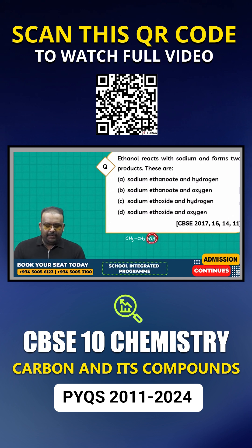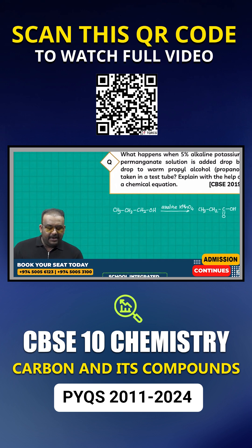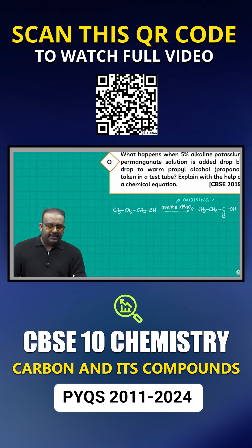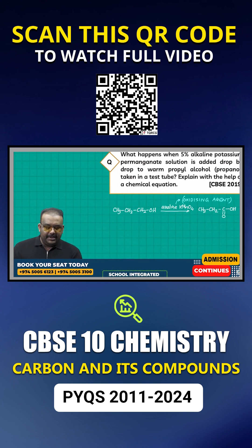In this reaction, what is the role of KMnO₄? KMnO₄ is acting as an oxidizing agent. It is called oxidation because, as you can observe with this carbon and this carbon, hydrogen is removed.